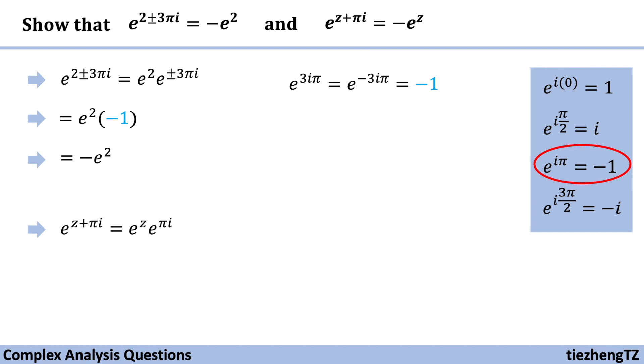And e to the power of pi i is minus 1. So we just need to substitute, and we get minus e to the power of z.